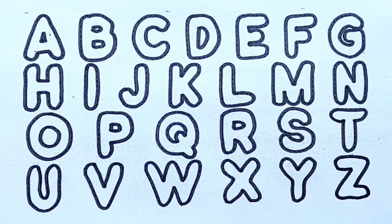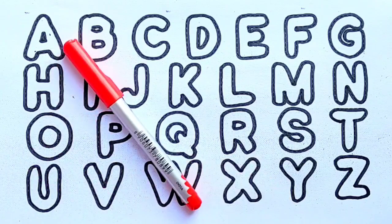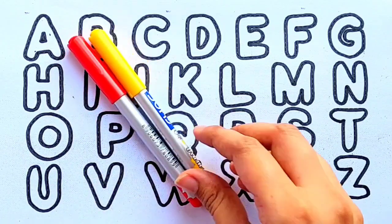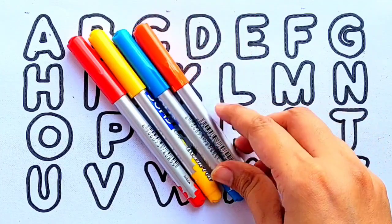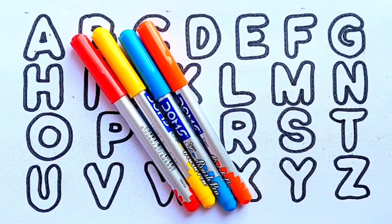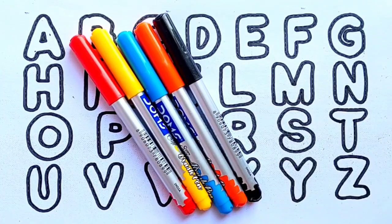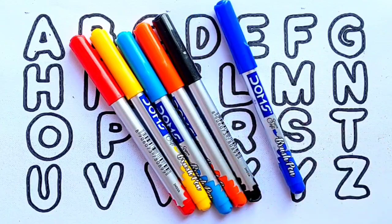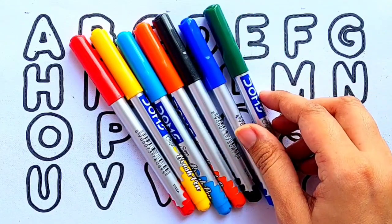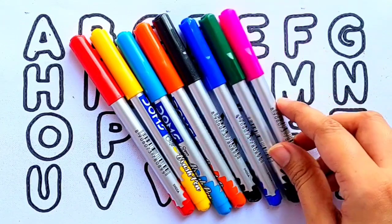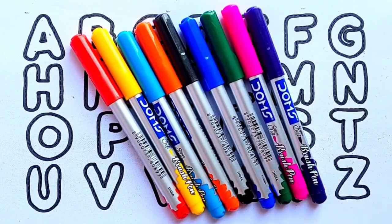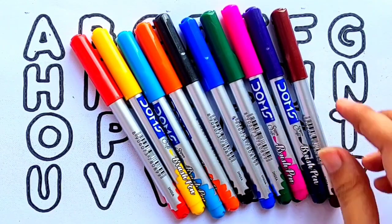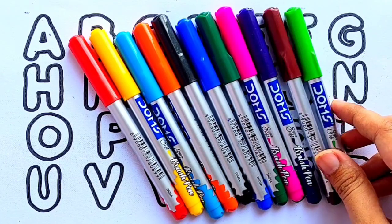Let's learn color names: red color, yellow color, sky blue color, orange color, black color, blue color, green color, pink color, purple color, brown color, light green color.